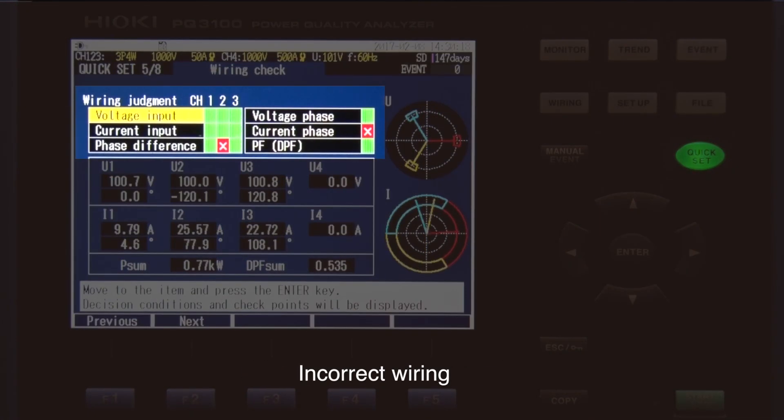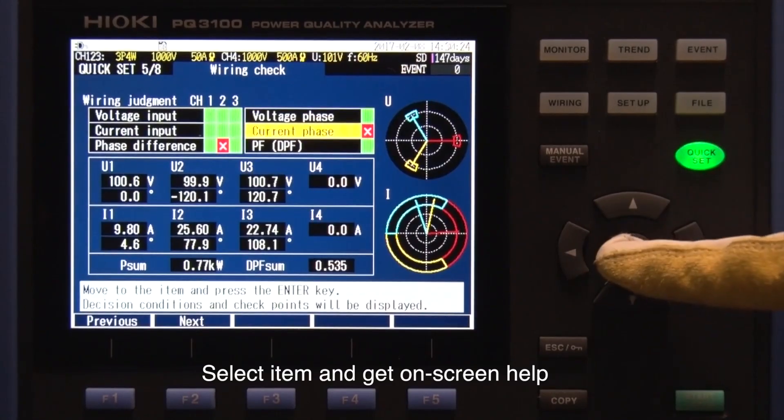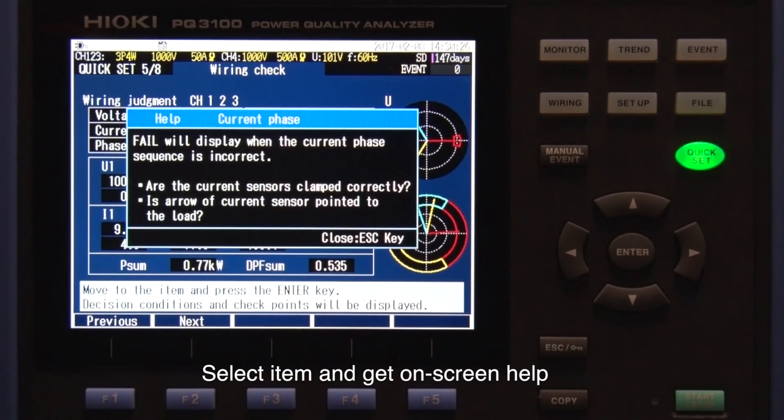Incorrect wiring is indicated in red. Yellow signals that you should double check the wiring. Select the items you want to adjust and get tips on how to fix the problems.